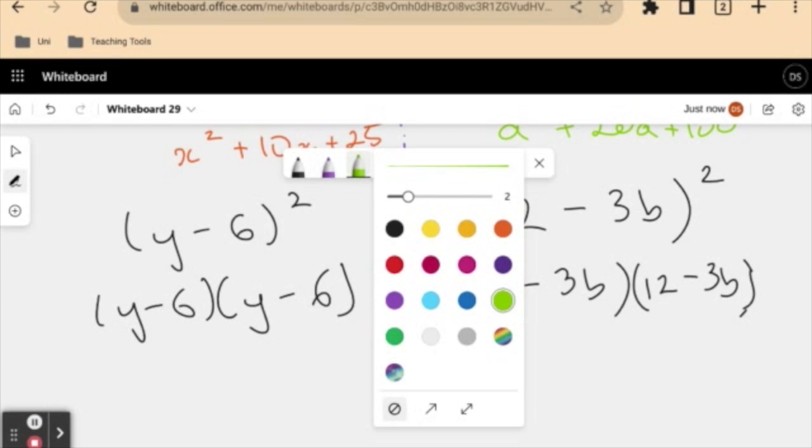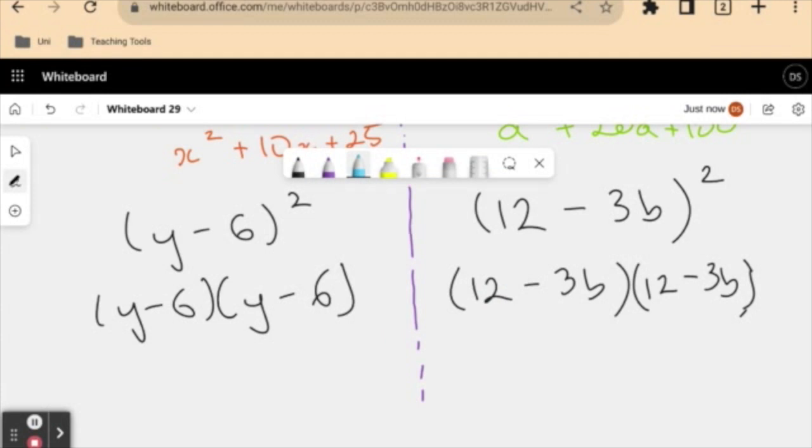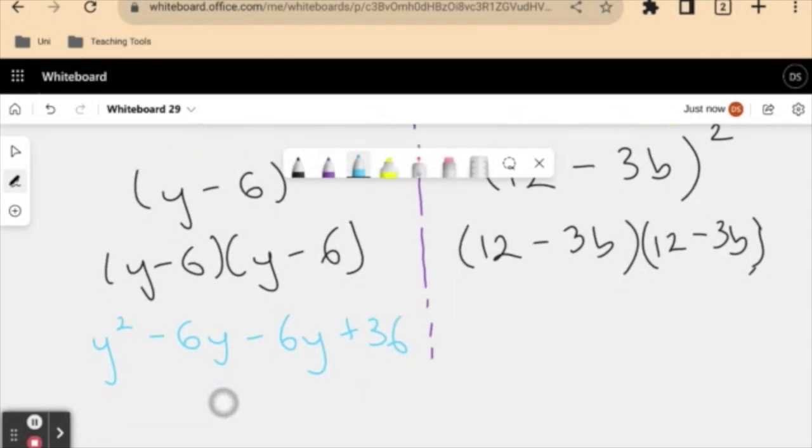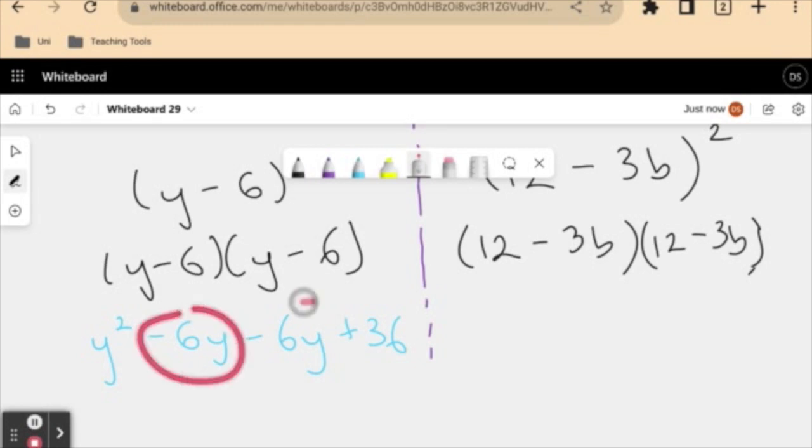So let's do this side here. Expanding this, my y multiplied by y gives me y squared. My y multiplied by negative 6 will give me negative 6y. My negative 6 multiplied by y will give me negative 6y again. And my negative 6 multiplied by my negative 6 will give me positive 36.